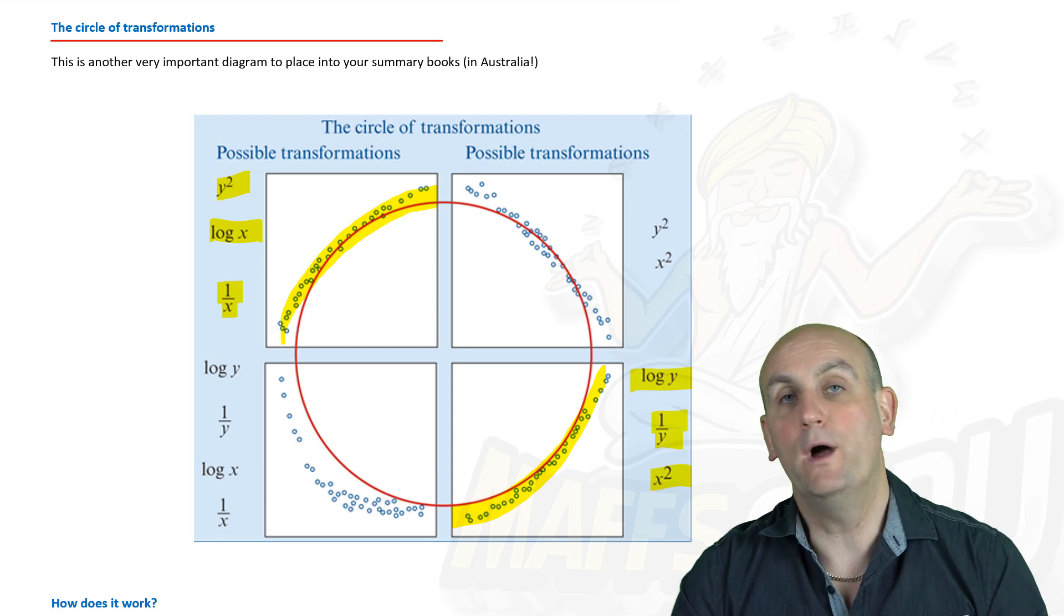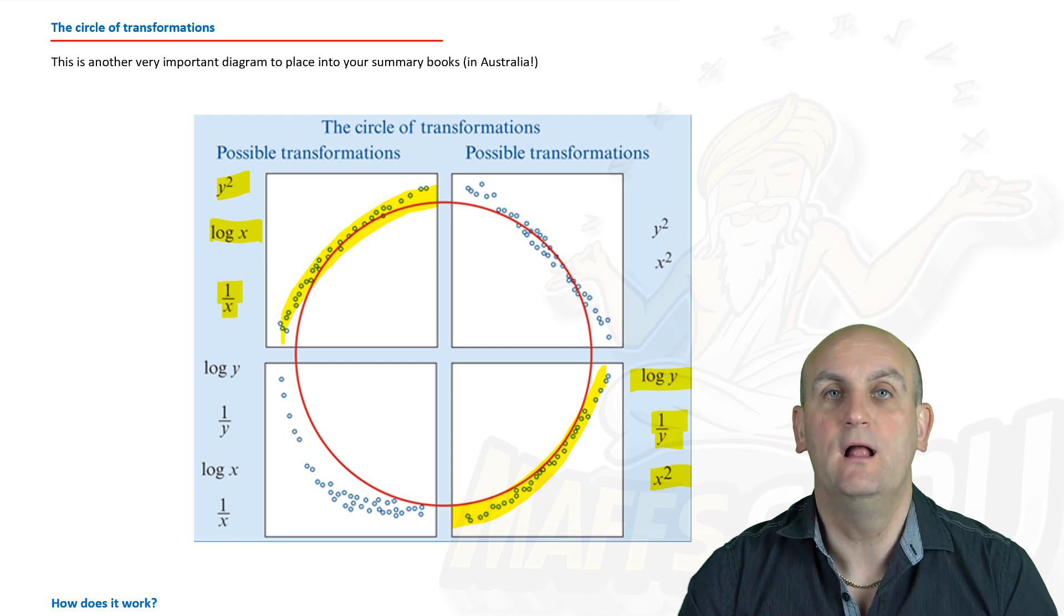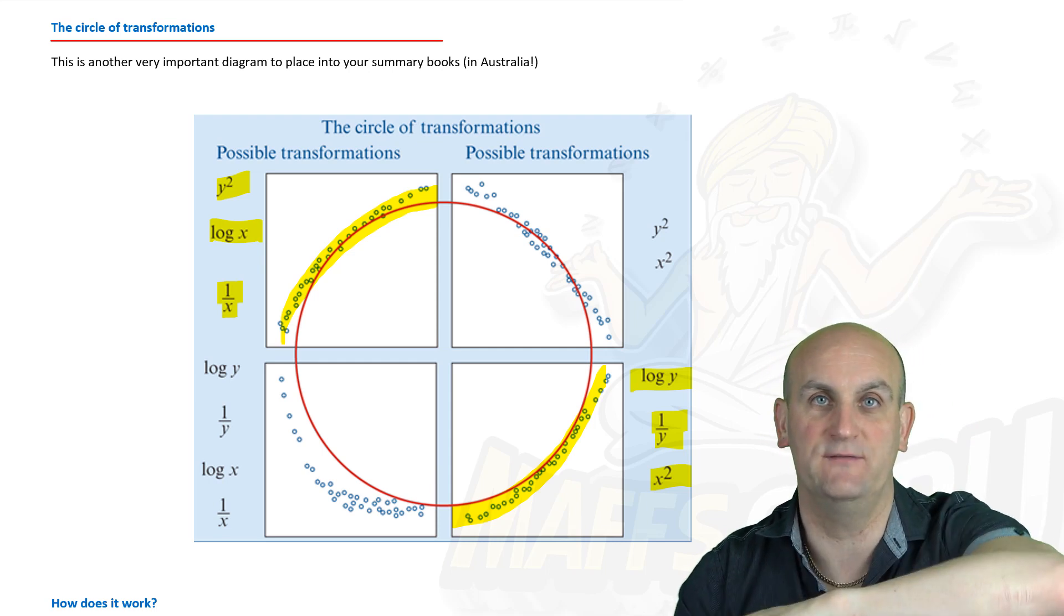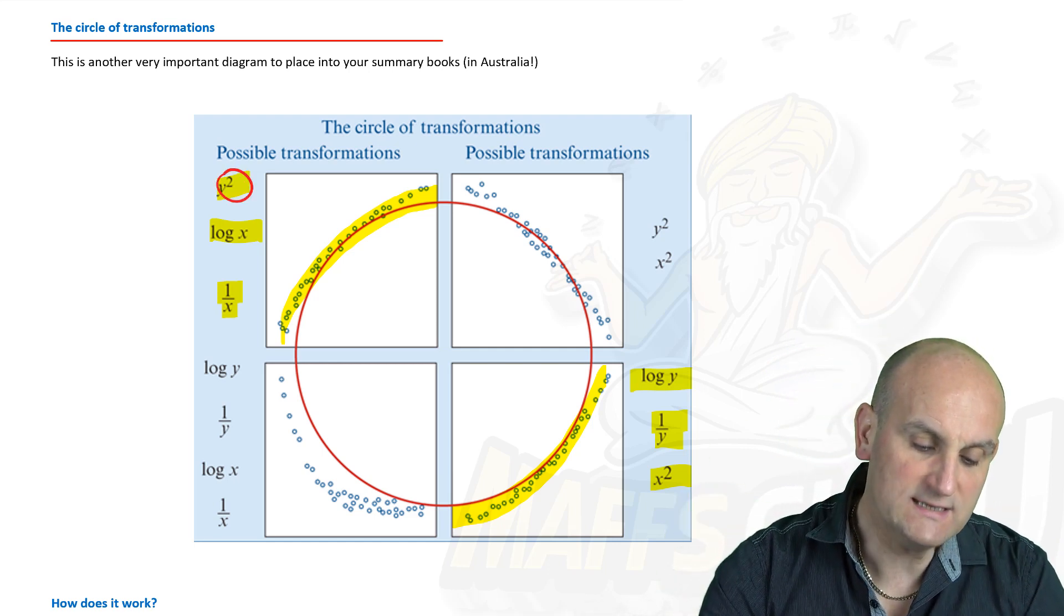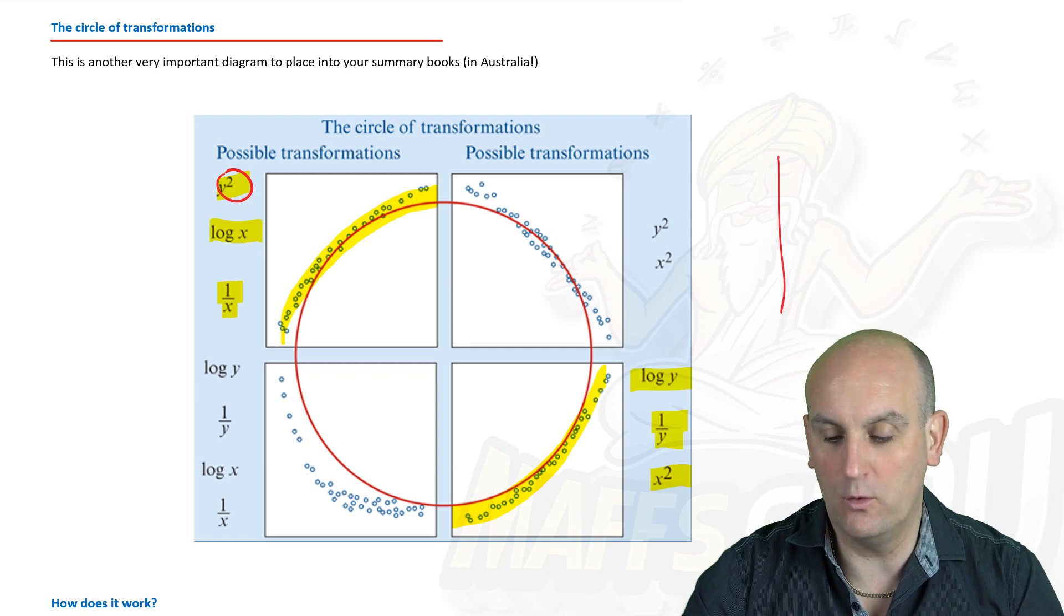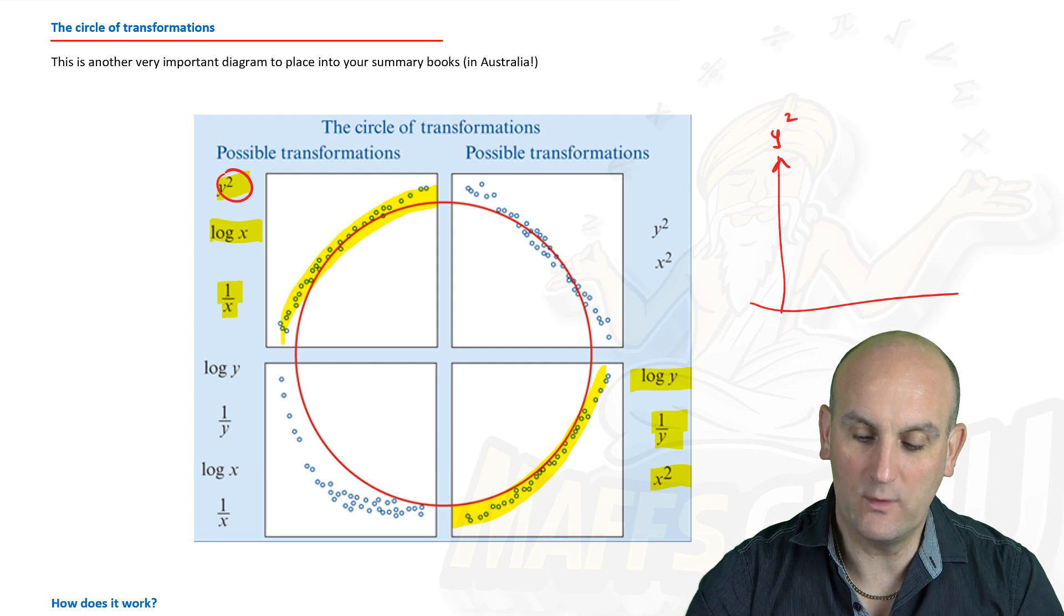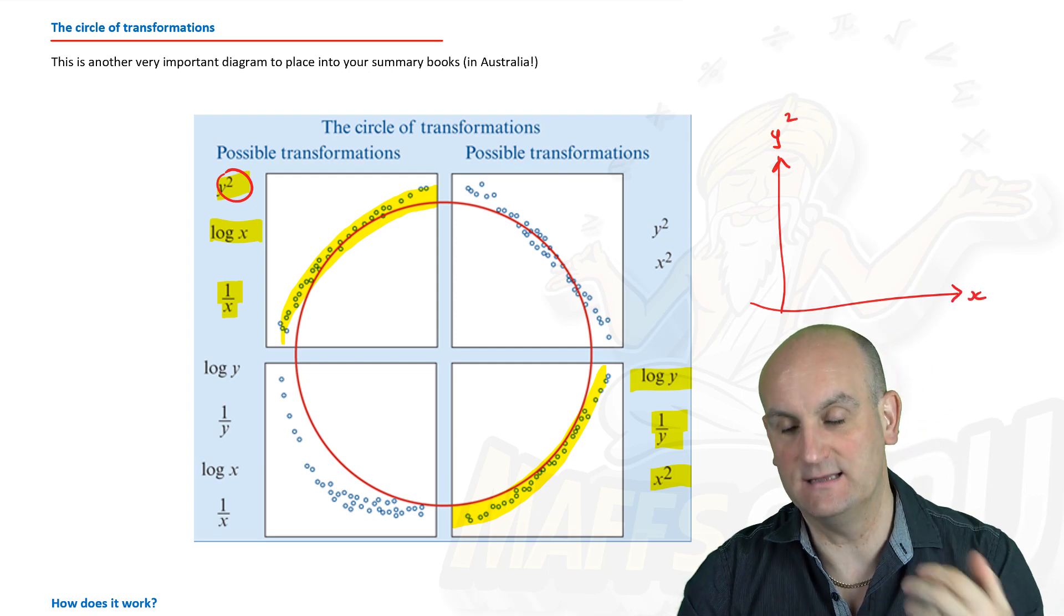A log y, a 1 on y and an x squared. Now it's really important to note here that the letters x and y are actually talking about a set of axes. This one or this one. So here when it says a y squared transform what we're going to do is we're going to take all of our values here on my y axis and we're going to square them. My x values will stay exactly the same right.